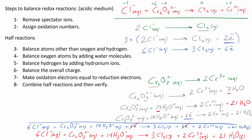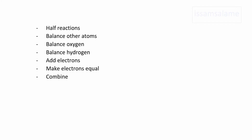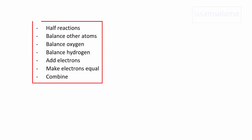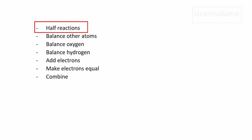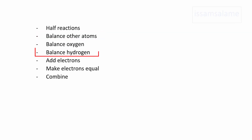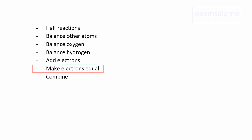I will not add more examples so as not to make the video too long, but I will add more videos in the future showing you how to balance redox reactions in acidic medium and also in alkaline or basic medium. So to balance redox reactions in an acidic medium, you have to follow these steps in order: split the reaction into half reactions, then balance other atoms, then balance oxygen by adding water, then add electrons to balance the charge, make the electrons equal, and then combine the two half reactions and verify that everything is balanced.